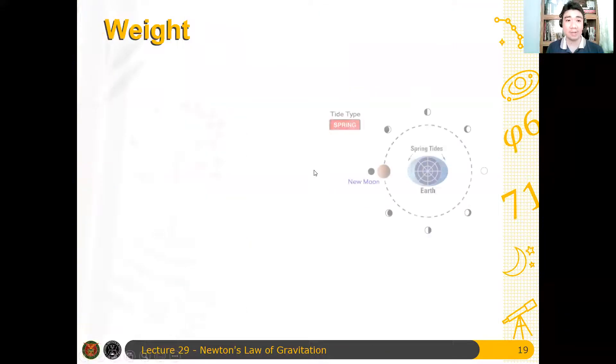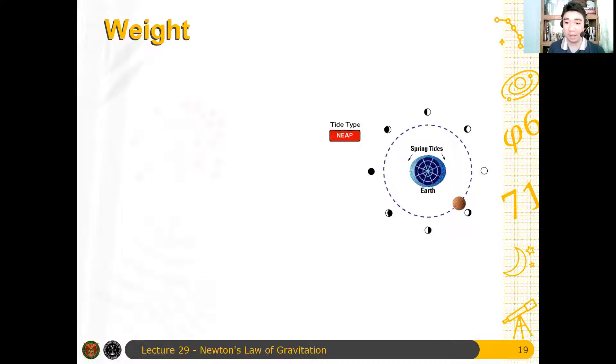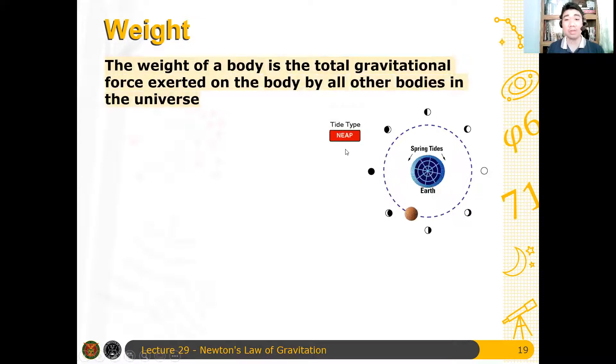So weight is simply, let's say for example, a planet that is just the moon that is revolving around the Earth. The weight instead is just the weight of a body is a total gravitational force that is exerted on the body by all other bodies in the universe.